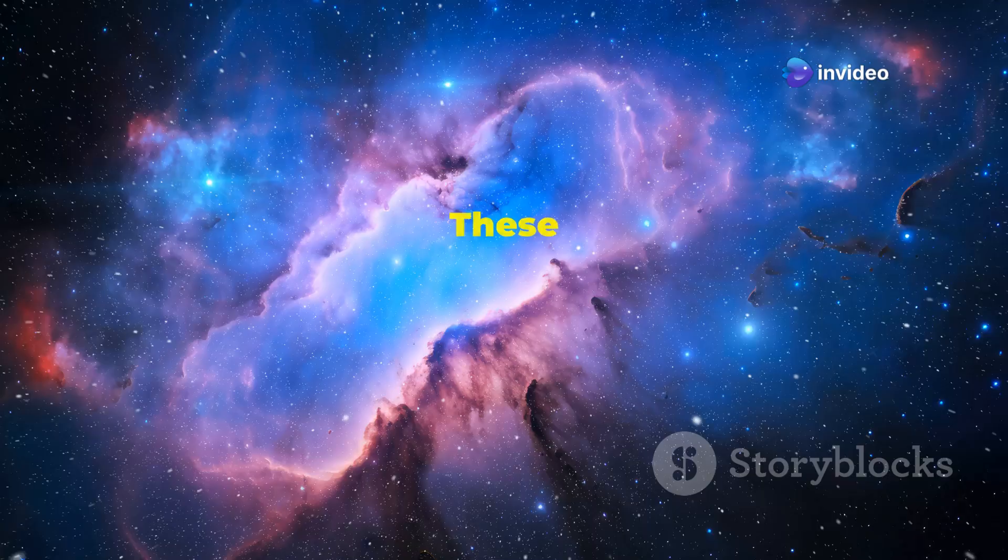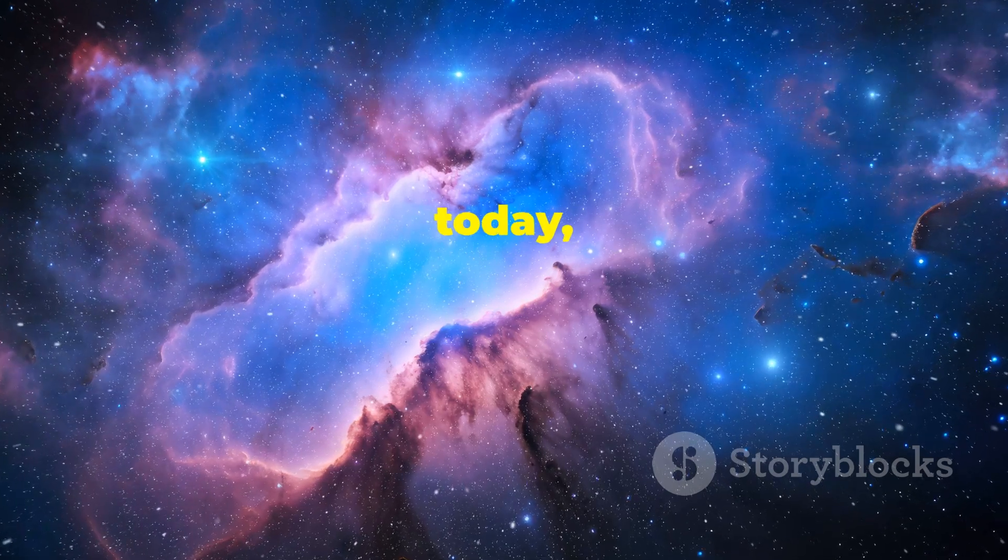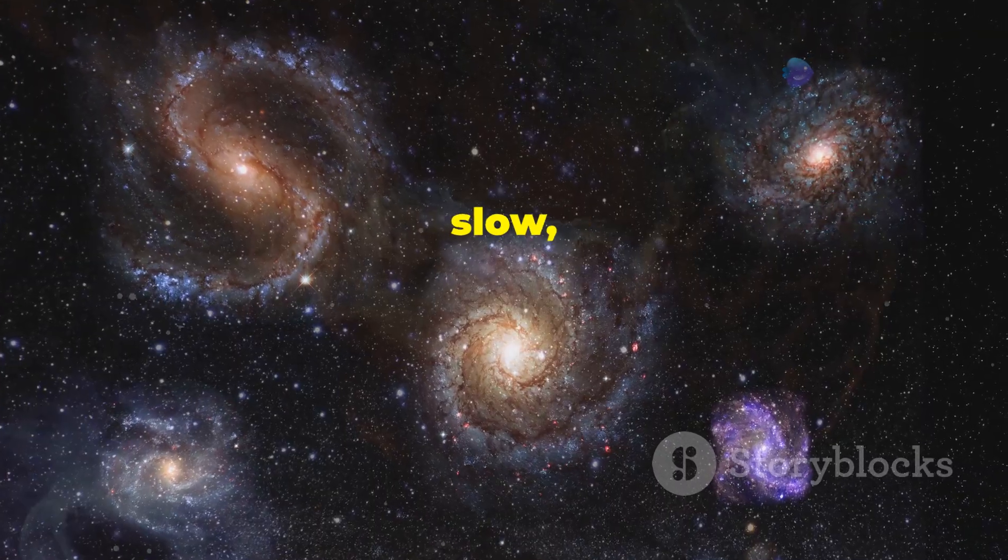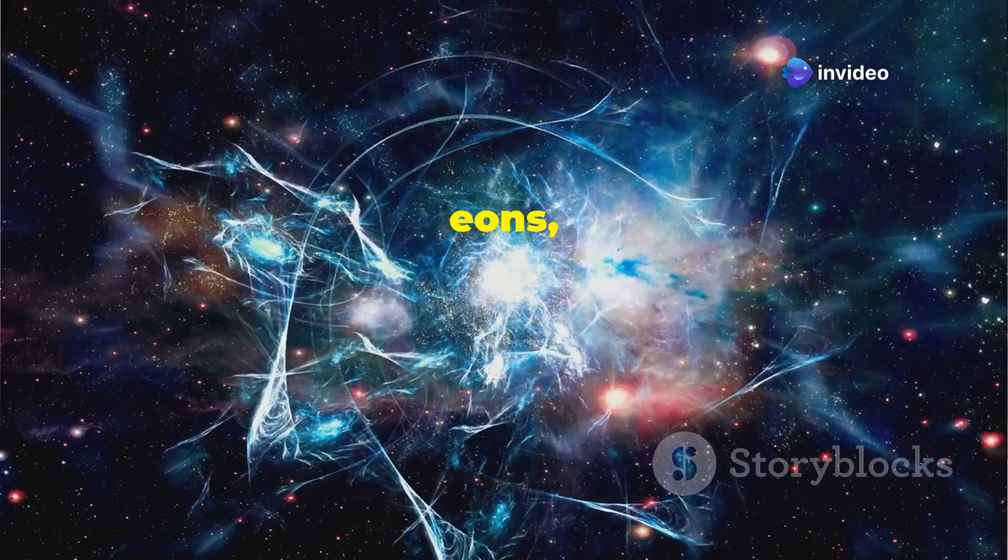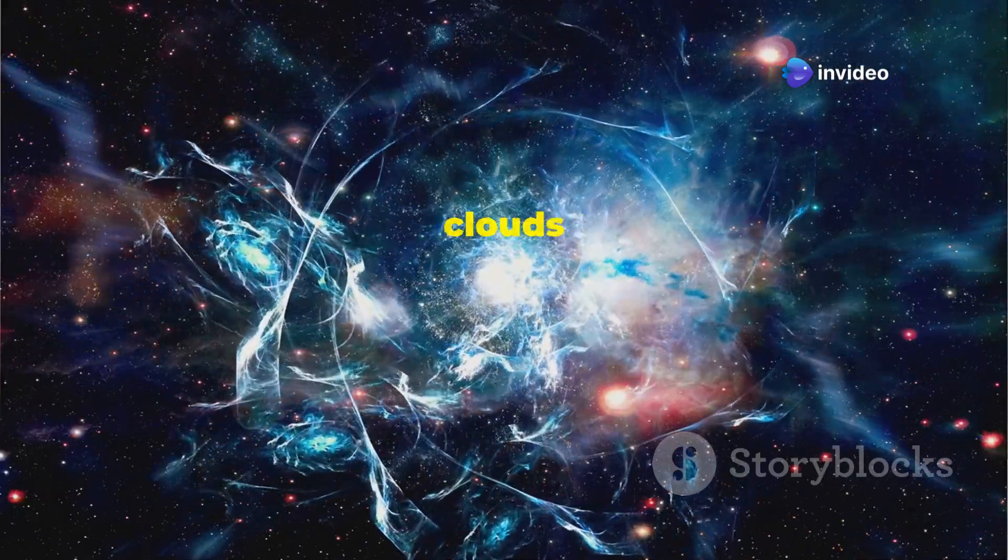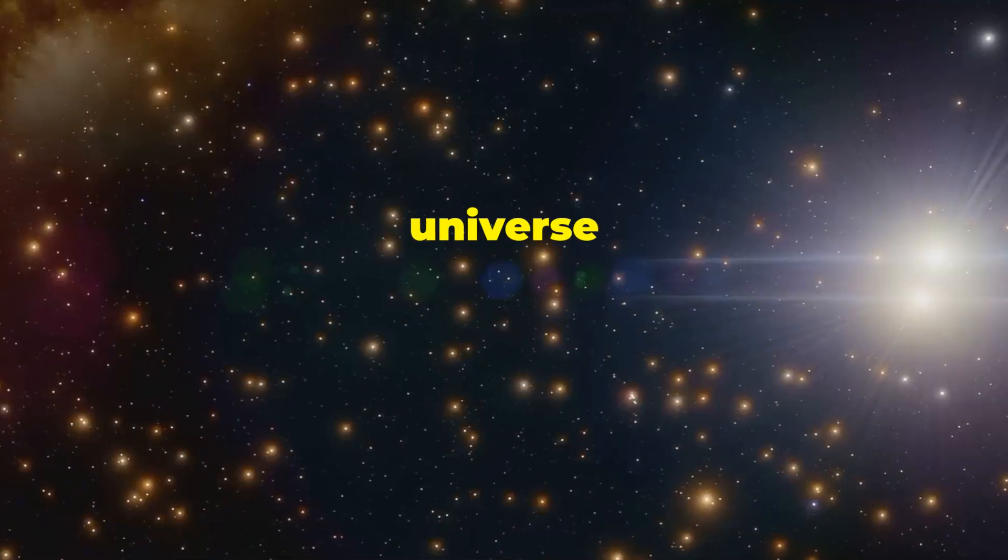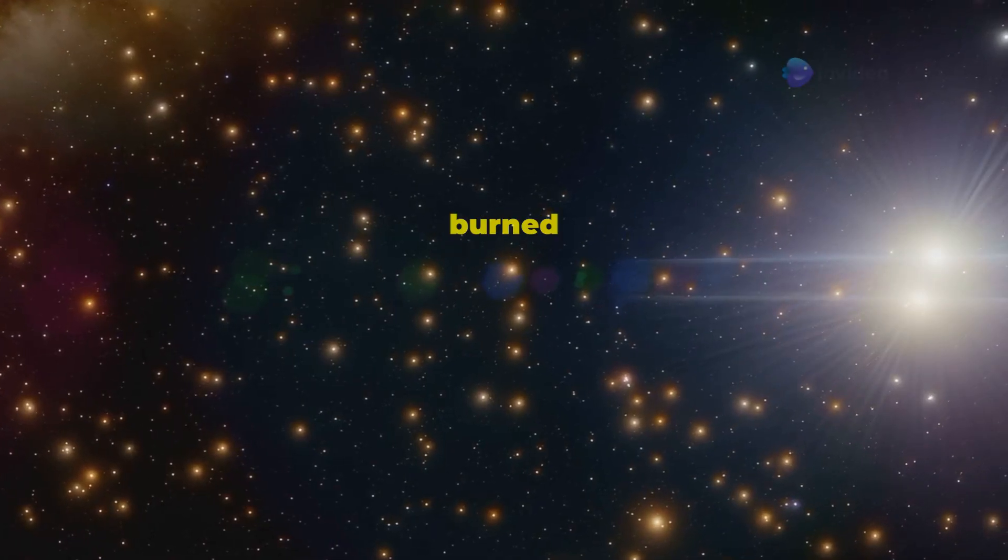Gravity continued to shape the universe, pulling together vast clouds of gas and stars to form the first galaxies. These galaxies were not yet the majestic spirals and ellipticals we observe today, but rather smaller, irregular clumps of stars and gas. Imagine a slow, graceful dance with gravity as the choreographer. Over eons, it drew matter together, shaping clouds of gas into stars and stars into galaxies. The universe was no longer a dark expanse, but a stage where countless stars burned bright.